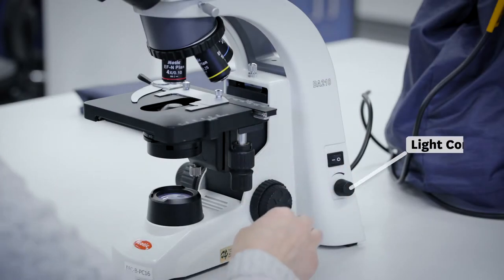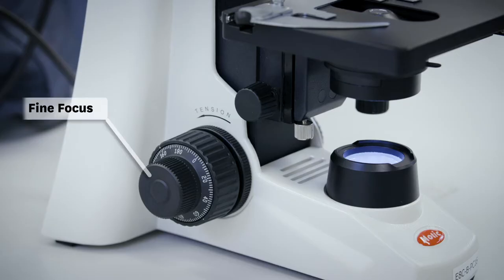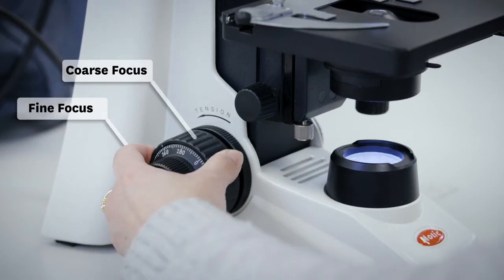The light intensity is controlled by the dial under the power switch. Rotate the coarse focus knob to bring the stage to the lowest position.